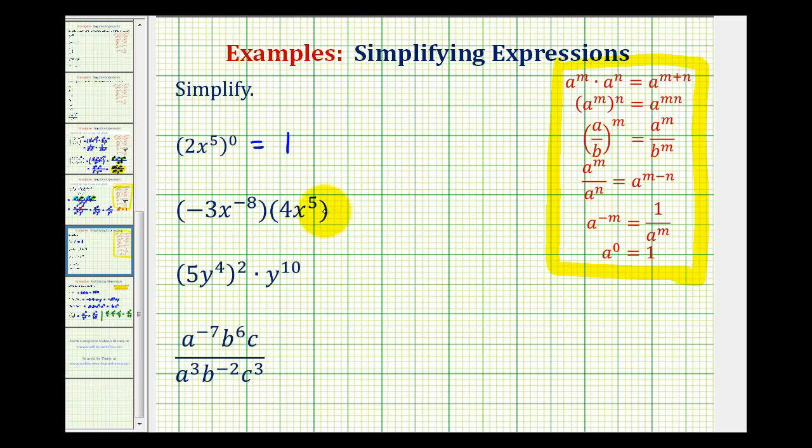Looking at the second example, we have negative three x to the negative eighth times four x to the fifth. Well, negative three x to the negative eighth means negative three times x to the negative eighth, and four x to the fifth means four times x to the fifth. And we know we can change the order of multiplication and not change the product.